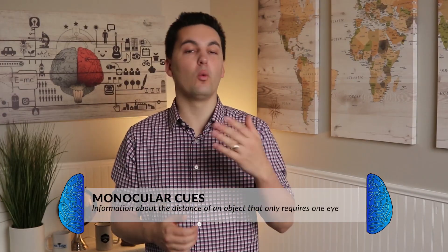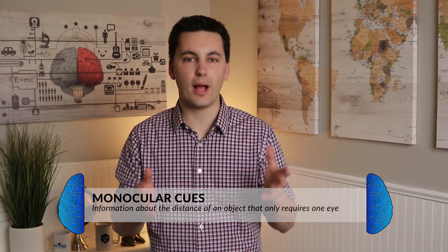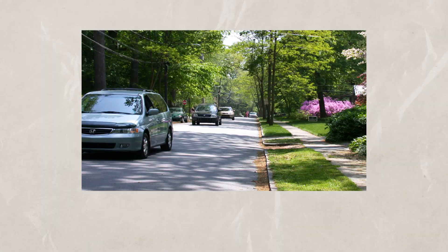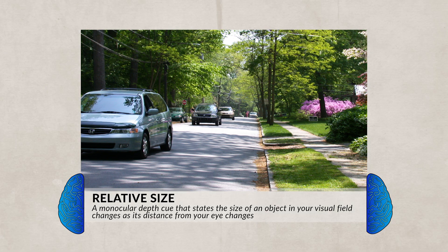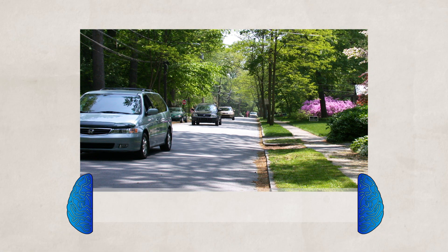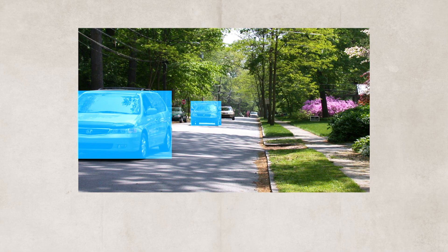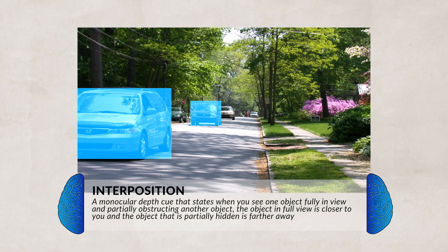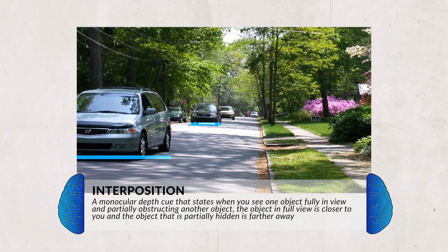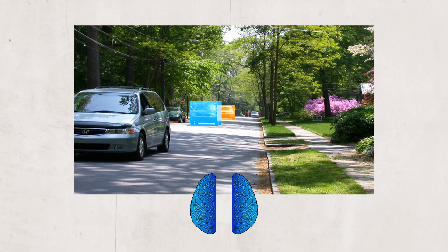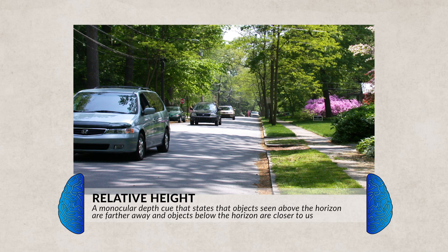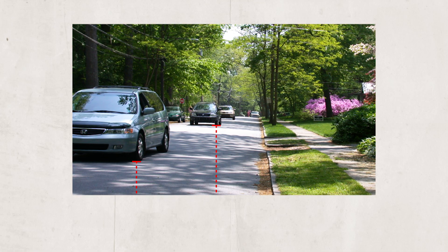Monocular cues look at how one eye helps you see and perceive the world around you; there are six different cues. The first is relative size — how we can determine how close an object is to us. For example, cars in a picture should be roughly the same size, but the cars closest to you appear larger. We can also see interposition: when the second car is in front of the third car, blocking part of it, we know the second car is closer to us. Another cue is relative height — objects that are higher appear to be farther away, and objects that are lower appear to be closer.